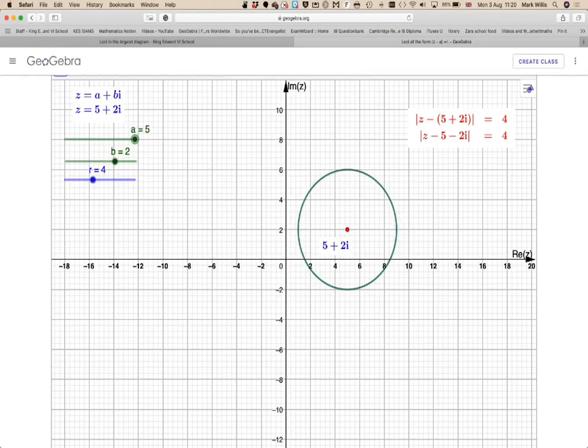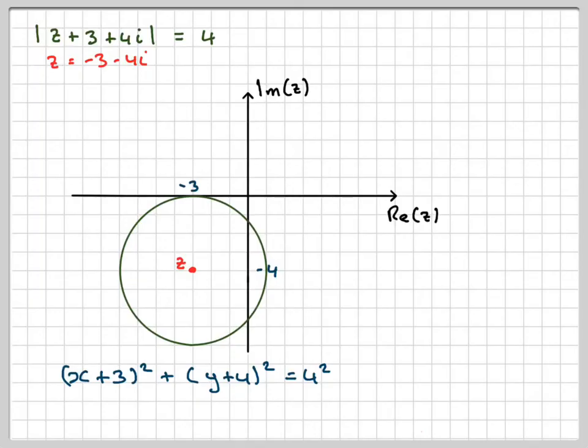We can also change the radius on this applet as well. So the applet I will put in the notes of the video. So there's been a video to show you how to find the Cartesian equation for the given loci. I hope you understood, and I thank you very much for watching.